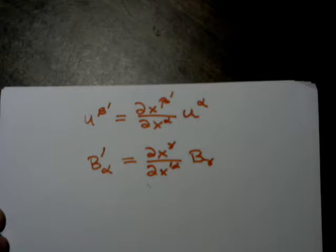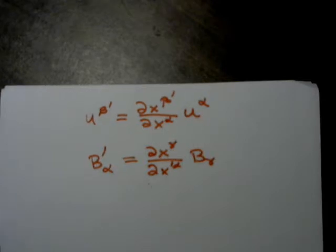Note that the partial derivative for the covector transformation has the primed coordinate in the denominator, not the numerator. The implied summation is over the coordinates in the numerator. To make the summation work, the index on the covector must be a subscript, not a superscript.